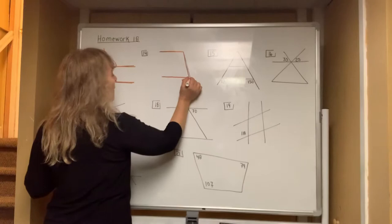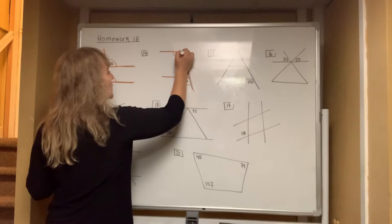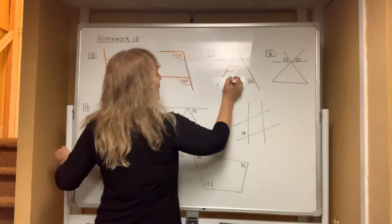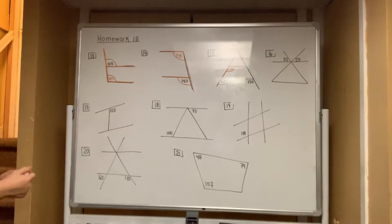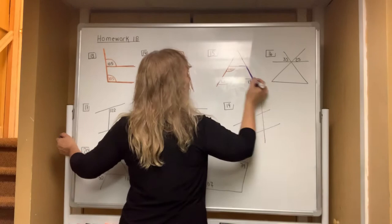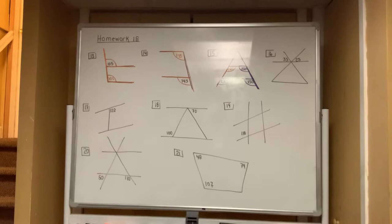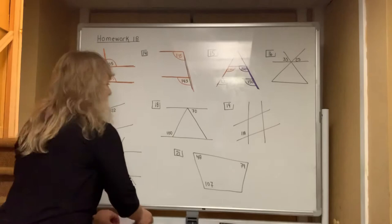In number 14, there's definitely a backwards F, and the angles underneath the branches are always equal to each other. In number 15, there's definitely an F, and the angles underneath the branches are always equal. In the same diagram, there's actually a backwards F, which means the angles underneath the branches are always equal. So here is my 150.